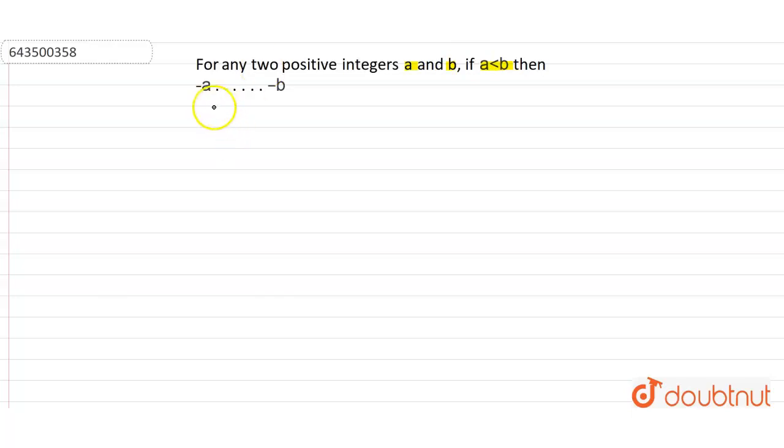See this one, I'll show you with the help of a few examples. They gave us a is lesser than b and both are positive integers. So first in the first case let's take a is equal to 1 and b is equal to 2.